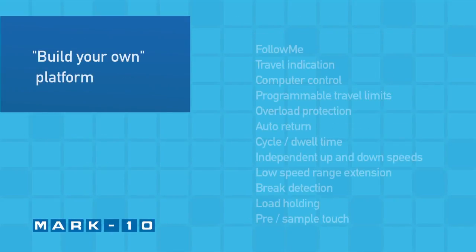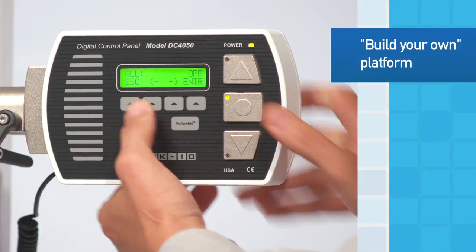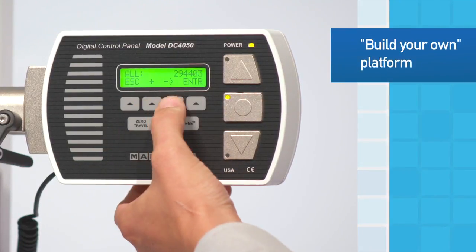Custom configure the ESM1500 to your needs and budget through its unique function configuration platform. Most functions not originally ordered can be enabled in the field by inputting an activation code.